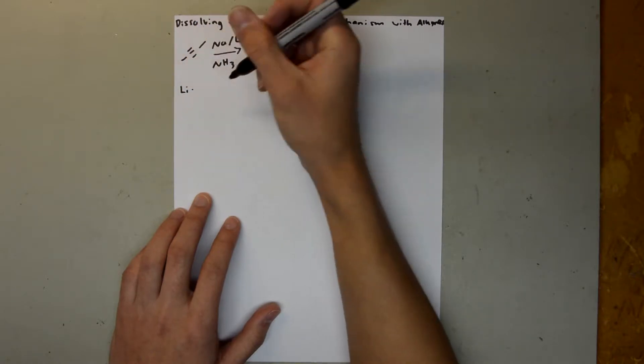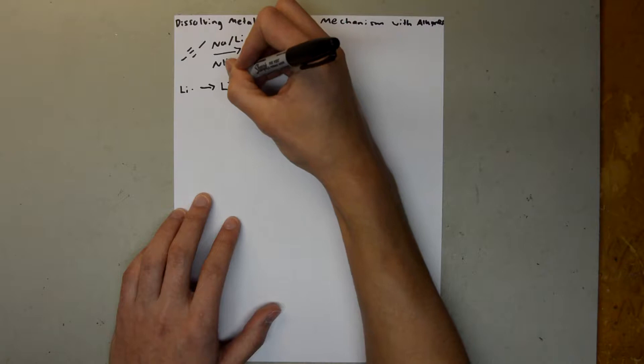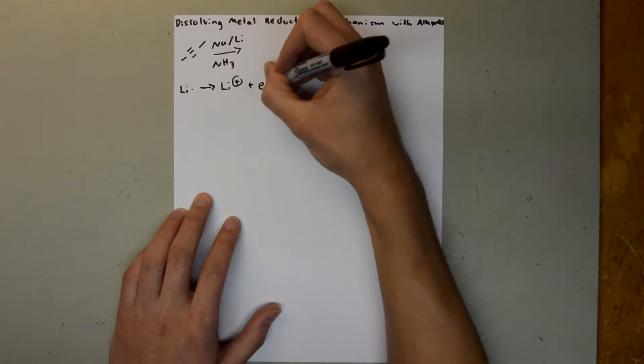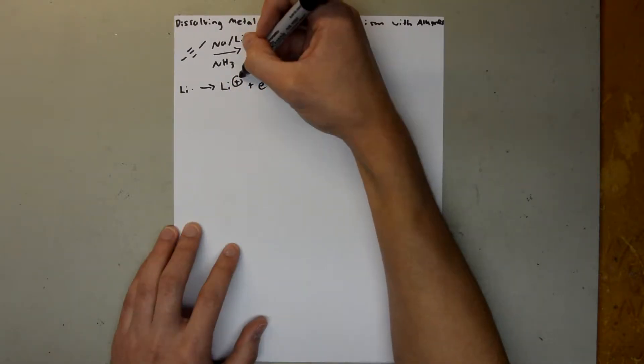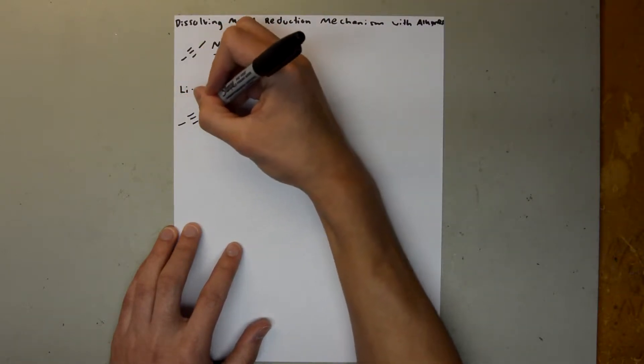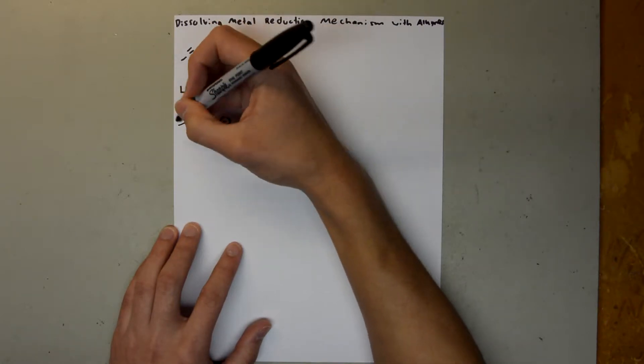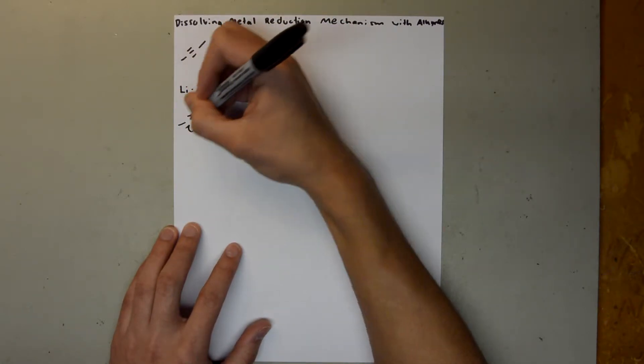So we have a lithium with an electron going to lithium plus, plus an electron. These represent a positive and a negative charge. And so we have our alkyne, and we're going to have an electron. And so one electron is going to go to this carbon hydrogen.